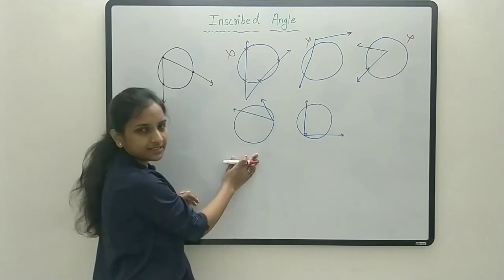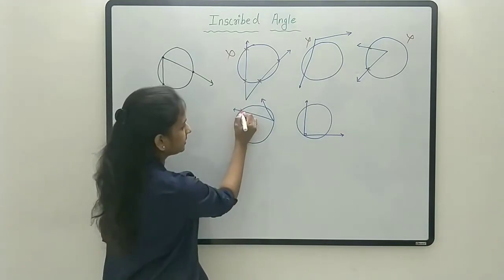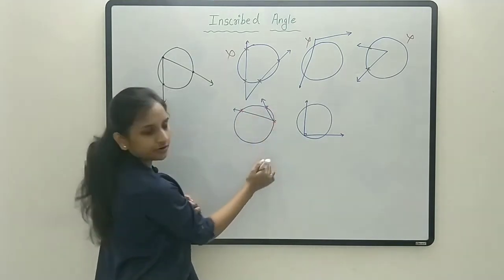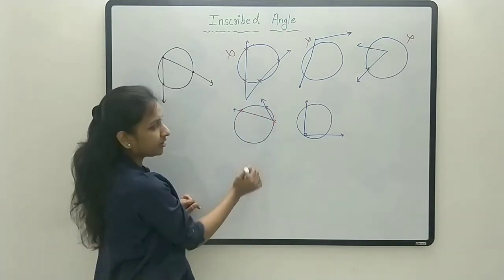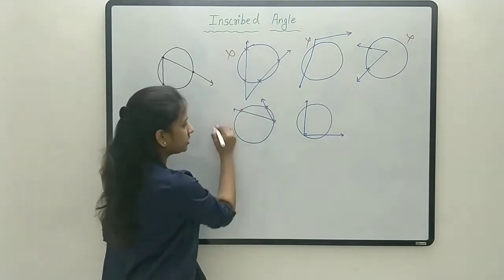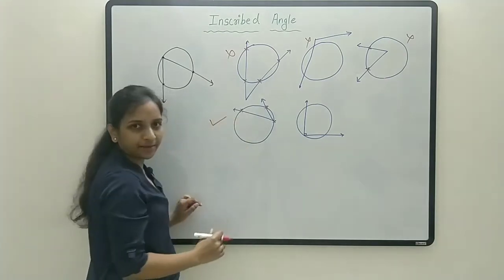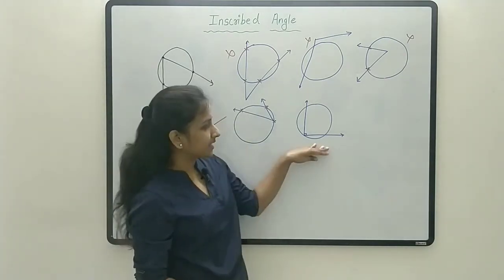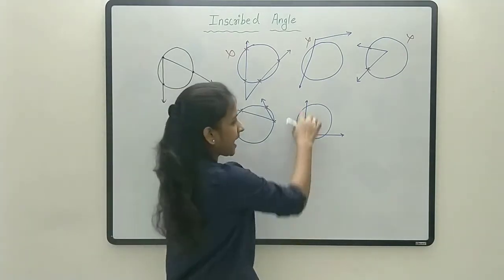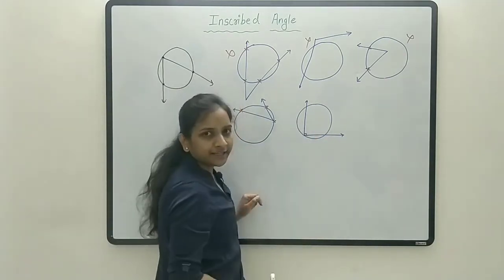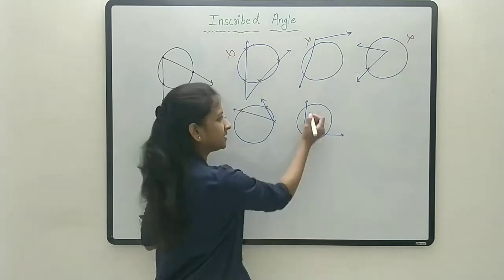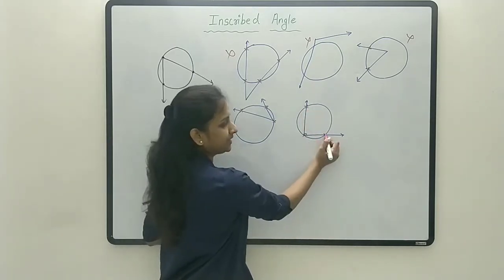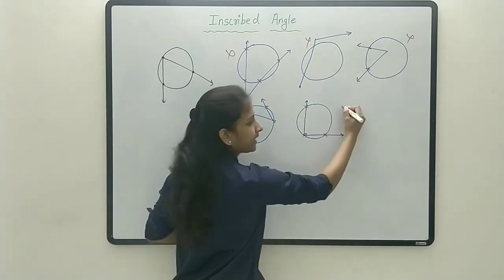Here in this example, there are three common points for the angle and the circle, so this is an inscribed angle. Here this angle is 90 degrees — there are three common points, so this is also an inscribed angle.